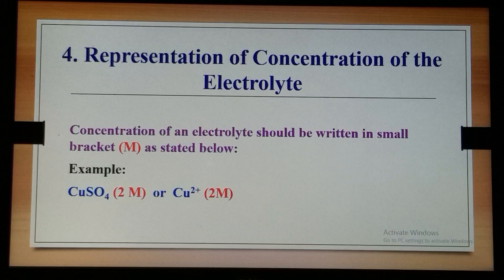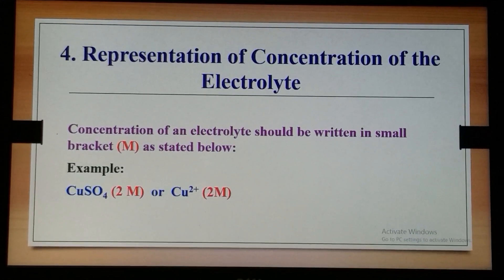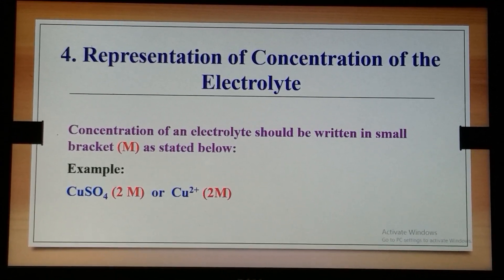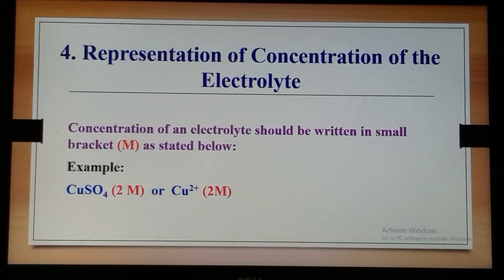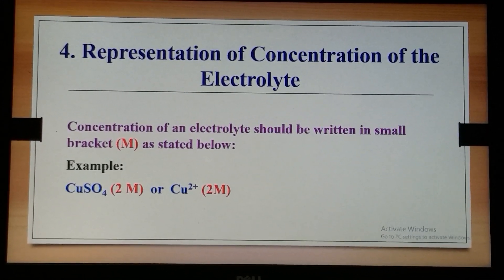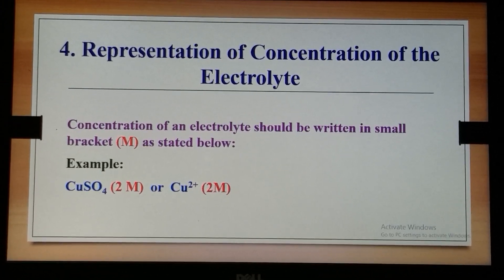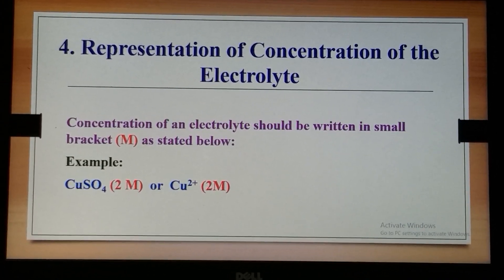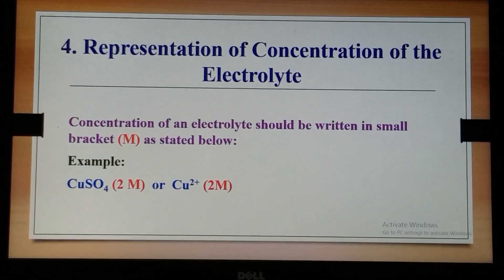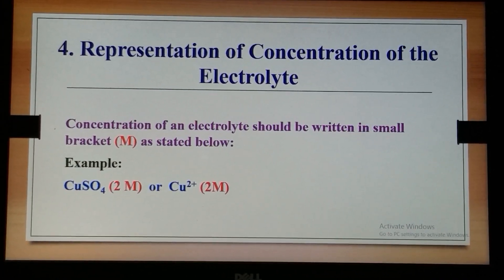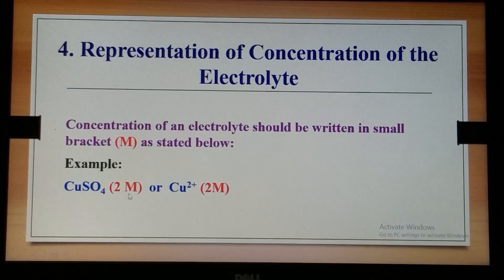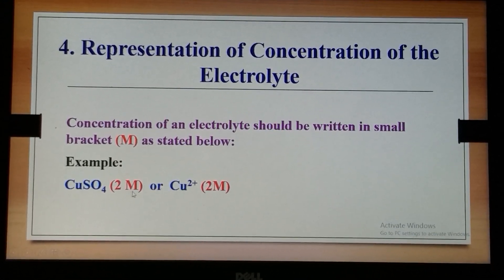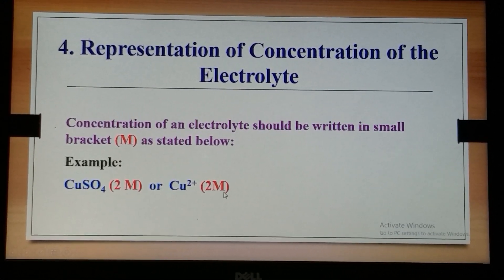Taking copper sulphate as the example, it can be written either with the formula or with the ionic species, and the concentration is written within the brackets.